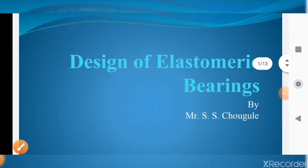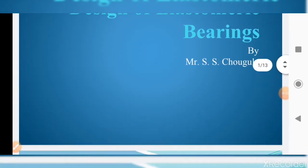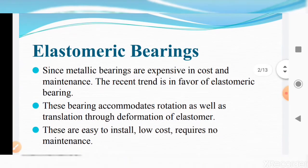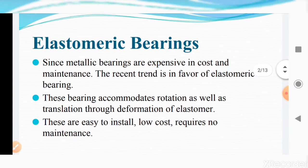Today we are going to see the design of elastomeric bearings. Since metallic bearings are expensive in cost and maintenance, the recent trend is in favor of elastomeric bearings. Elastomeric bearings are made up of elastomer, a material like rubber, and are sometimes stiffened by the insertion of steel laminates.